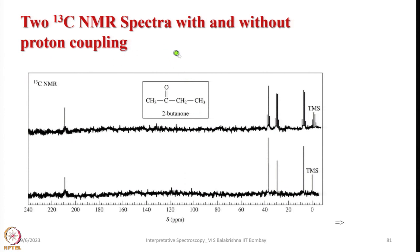We will look at 13C NMR spectra of butanone taken with and without proton coupling. Without coupling you can see four different carbon atoms. In the coupled spectrum, the methyl group coupled to 3 protons gives a quartet, the methylene coupled to 2 protons gives a triplet, the other methyl coupled to 3 protons gives another quartet, and the carbonyl carbon with no directly attached hydrogen shows a singlet. For a simple molecule this is manageable, but for complex biological molecules it is advisable to record the decoupled spectrum for structural elucidation.